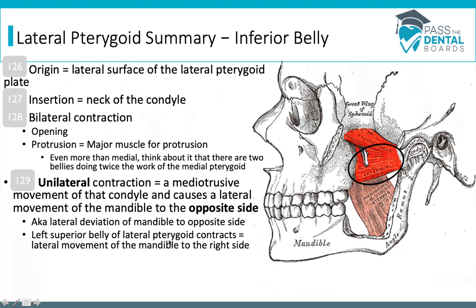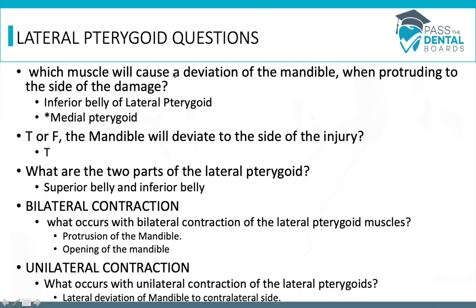One curveball they might throw in is asking which muscle causes a deviation of the mandible when protruding to the side of damage — that's going to be the inferior belly of the lateral pterygoid, though the medial pterygoid can also be the answer if the lateral pterygoid isn't listed. True or false: the mandible will deviate to the side of injury — that is true. Bilateral contraction of the inferior belly causes protrusion and opening of the mandible; unilateral contraction causes lateral deviation to the contralateral side.